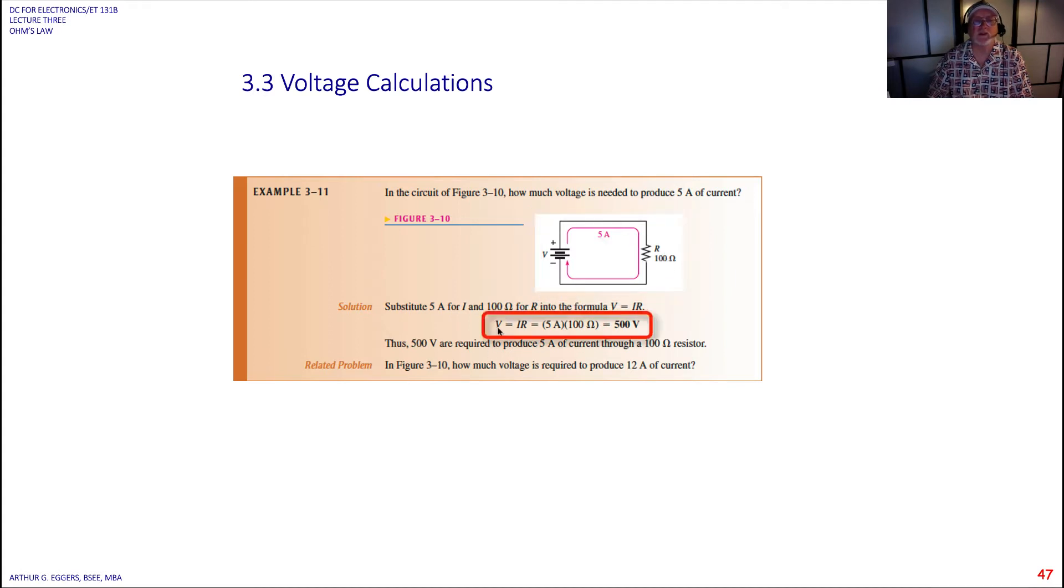So we go back to Ohm's Law. Voltage equals current times resistance. Notice now we're not using the quotient relationship, we're using the product relationship. And the product relationship is telling us what? Everything is in the numerator. So everything is proportional. Everything multiplies out.